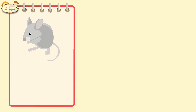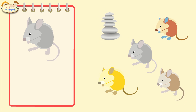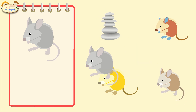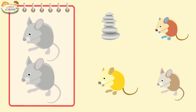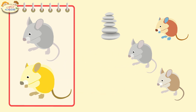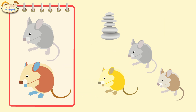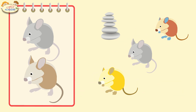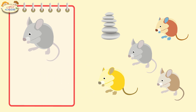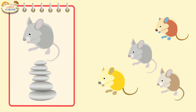Here is a mouse. Let's look at these objects and find one that's different. Maybe this one is different? No, these mice are the same. Maybe this one? No, these mice are similar. Then maybe this one? No, these mice are also similar. Maybe this one? No, this one is also similar. Then maybe this one? Yes, this object is different.